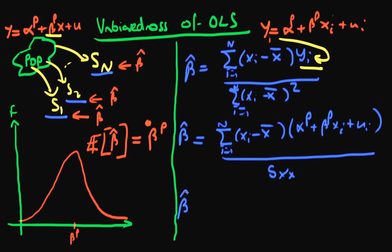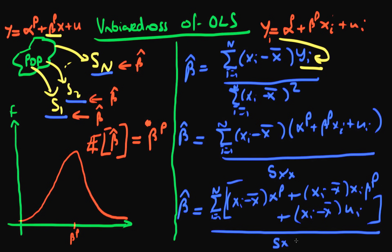Okay, so if I then continue this further by multiplying out each of these terms I will get the sum of i equals 1 to n of xi minus x bar times alpha p, plus xi minus x bar times xi beta p, plus finally xi minus x bar times ui. And remember again that this is all over this sxx.